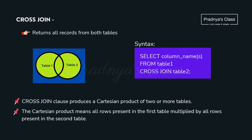We will start with cross join. Cross join is used when we want all records from both the tables. Look at this diagram — if we have two tables, table one and table two, we will get all the records from both. For cross join, we use the select command with the required column names, followed by the from keyword, then table one, then table two.